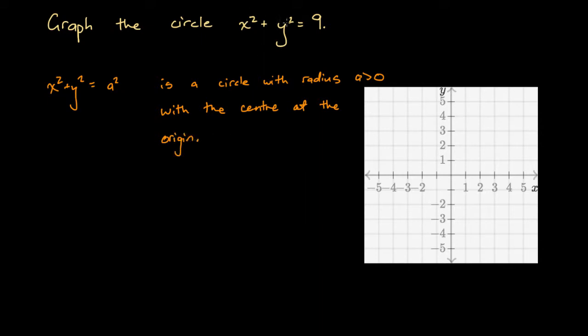Here, x squared plus y squared equals 9. Let's compare that to x squared plus y squared equals a squared. These look very similar on the left-hand side. The only thing that's different is the right-hand side at the moment. So this is 9 and this is a squared.